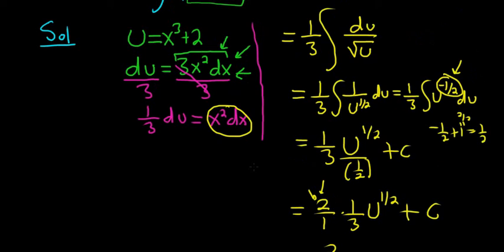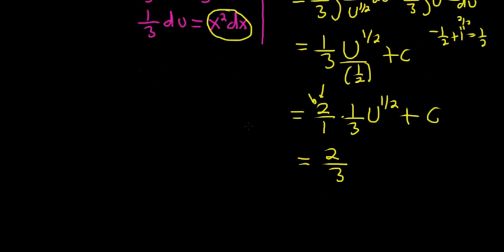Let's check - u is x³ plus 2. So we replace u with x³ plus 2, and the whole thing is to the 1/2 power. We could write it as a square root, but I'll leave it to the 1/2 power.